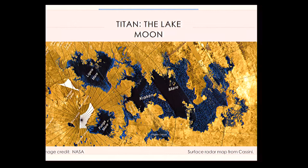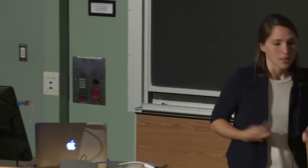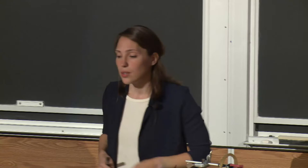This is a beautiful radar image of the surface from Cassini, the mission that recently plummeted into Saturn. It spent about 10 years collecting data, and at the end of its mission, the right thing to do is burn it up in Saturn's atmosphere so you don't accidentally contaminate Titan.